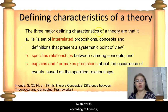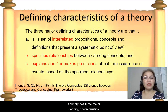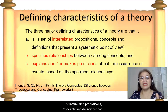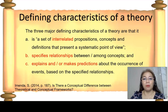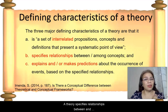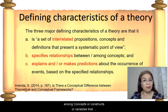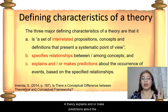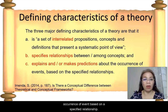To start with, according to Emenda, a theory has three major defining characteristics. Number one, he says that a theory is a set of interrelated propositions, concepts, and definitions that present a systematic point of view. Second, a theory specifies relationships between and among concepts or constructs or variables that are being studied in a research project, and that a theory explains and or makes predictions about the occurrence of events based on the specified relationships.